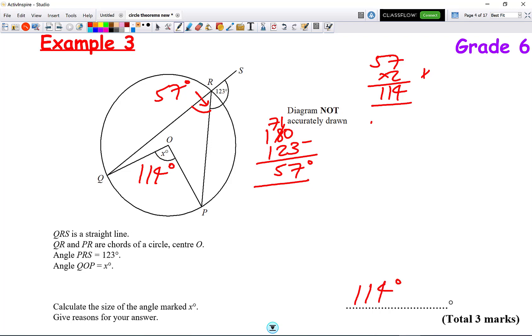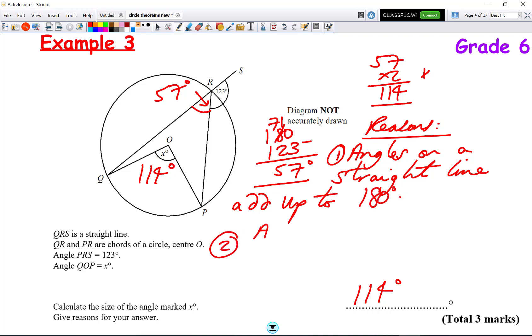But this time we need to state two things, two reasons for this question. First, the angles on a straight line add up to 180, and the second reason is the angle at the centre is twice the angle at the circumference.